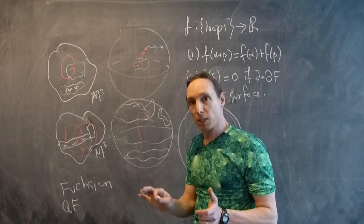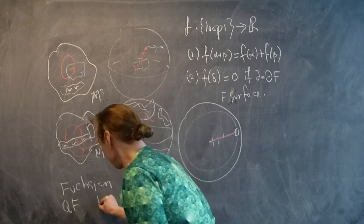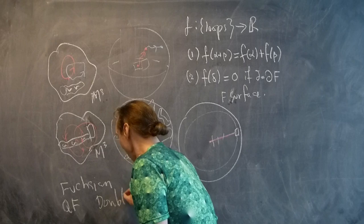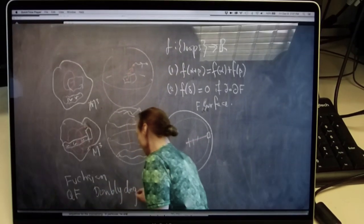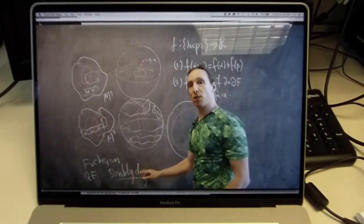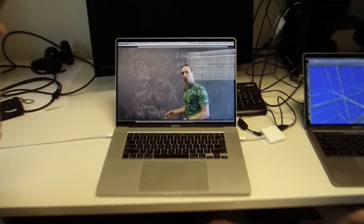Or it can be what's called a doubly degenerate surface. And these three different kinds of surfaces give you three different kinds of fractals.